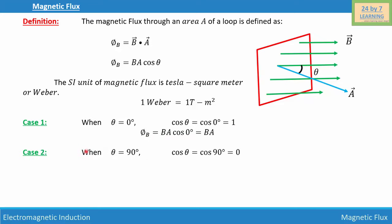Case two: when theta is equal to 90 degrees, cosine theta equals cosine 90, which is equal to zero. So the magnetic flux phi B is equal to B A cosine 90, which equals zero, because cosine 90 is equal to zero.